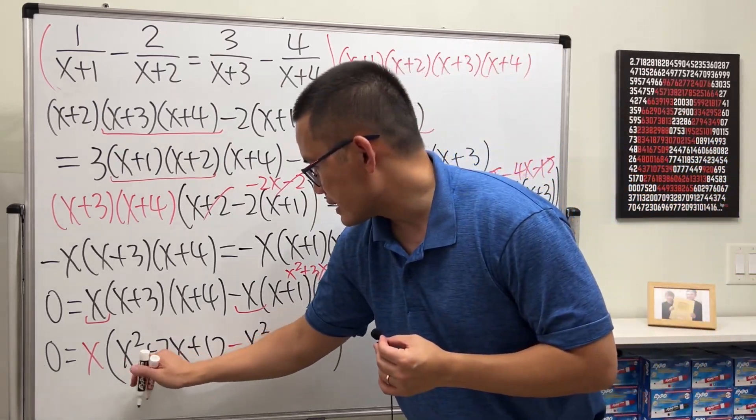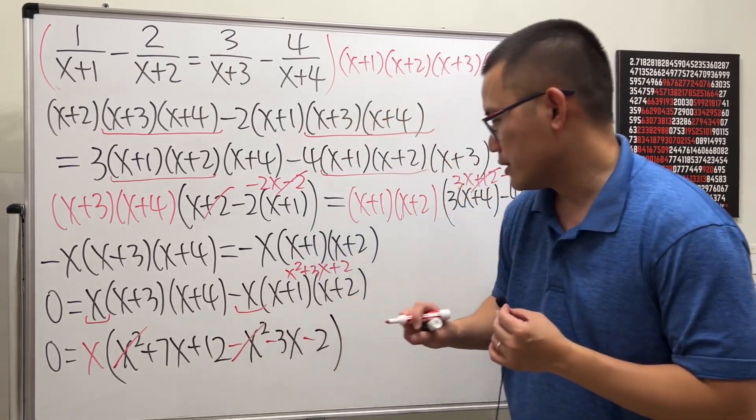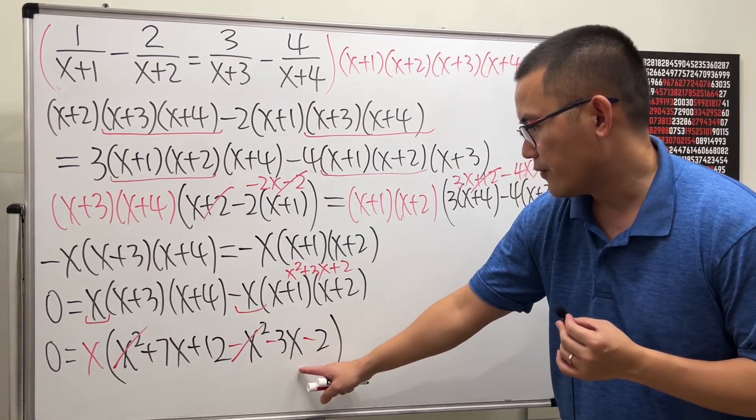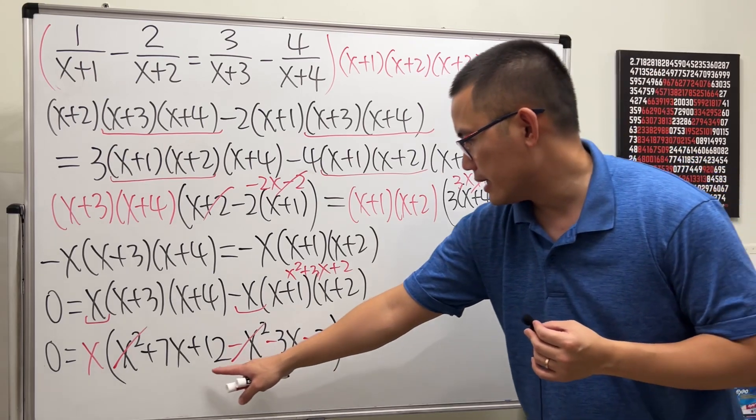So, from here, you can see that x squared minus x squared is out. And then this and that is 4x, and then this and that is 10.